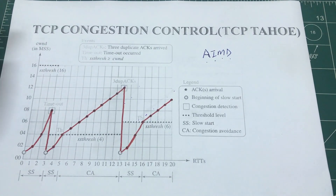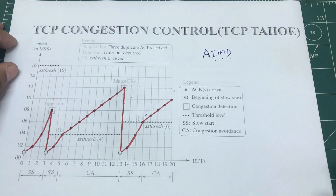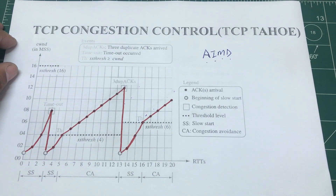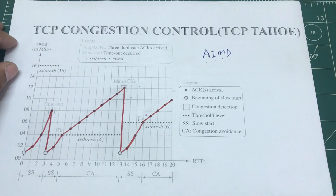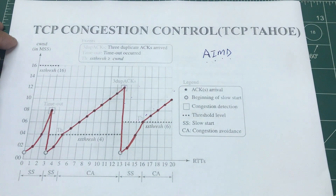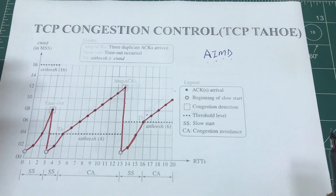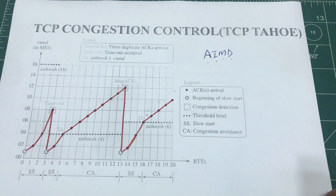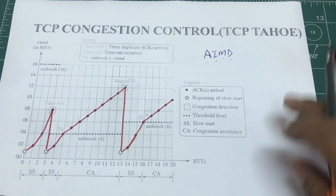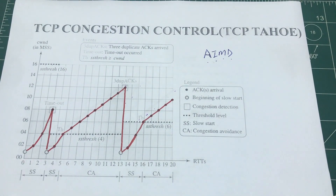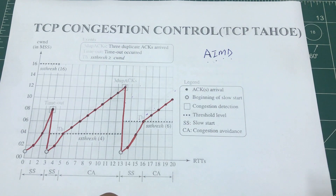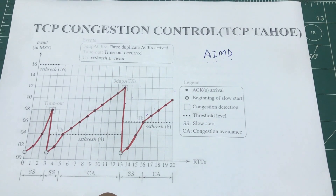Welcome back to my channel. Today we're going to look at TCP congestion control. We're going to look at an algorithm generally known as AIMD — Additive Increase Multiplicative Decrease — and we're going to look at an example of TCP Tahoe based on a graph. Then we're going to look at a newer version called TCP Reno.